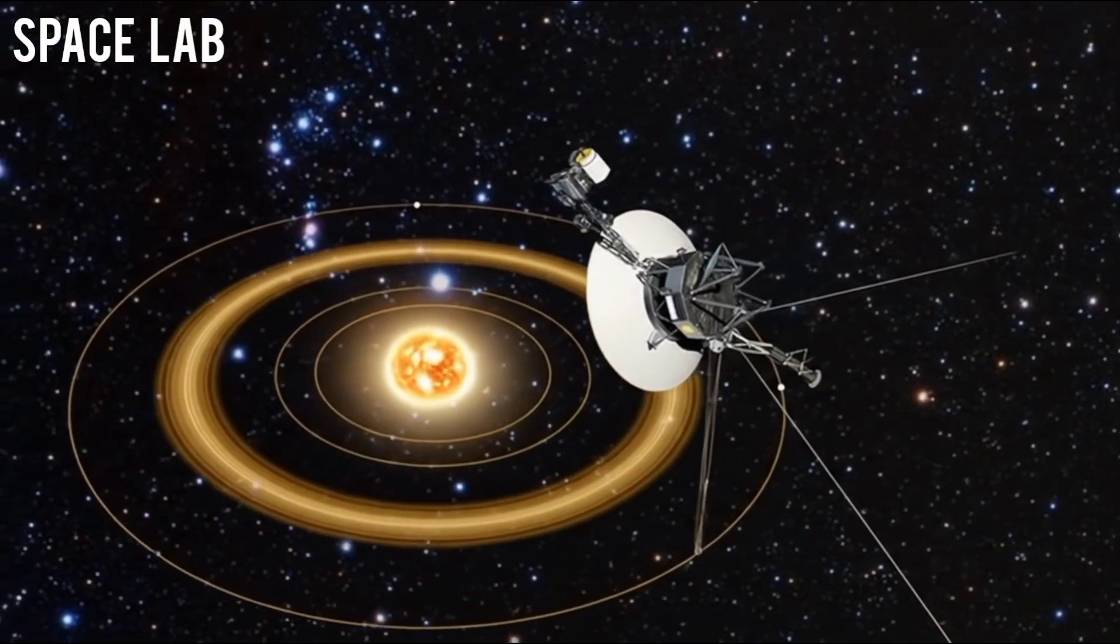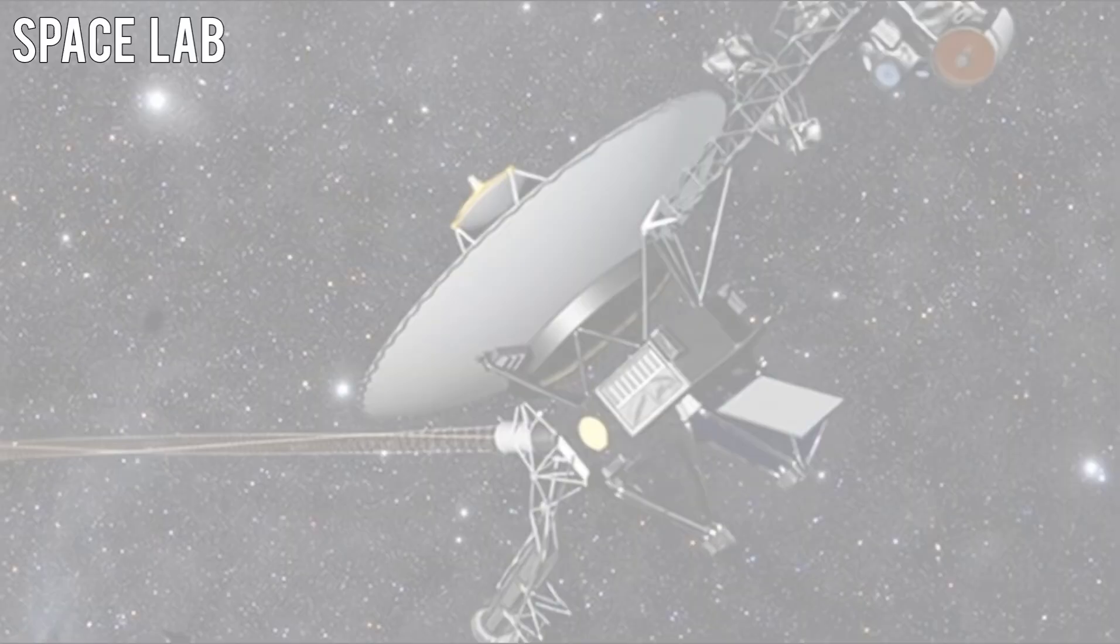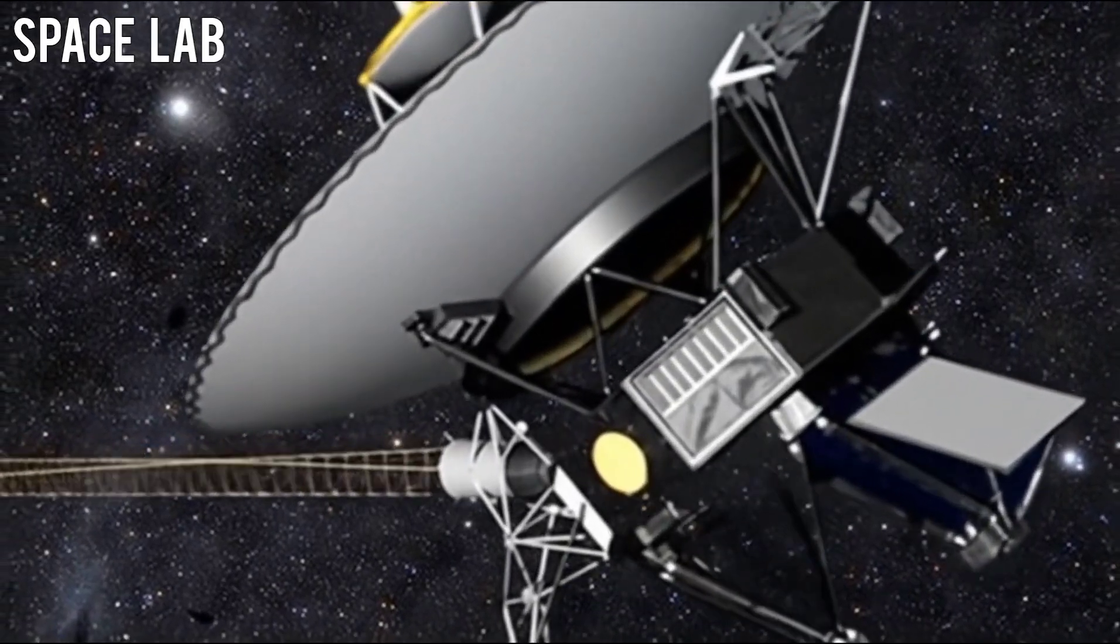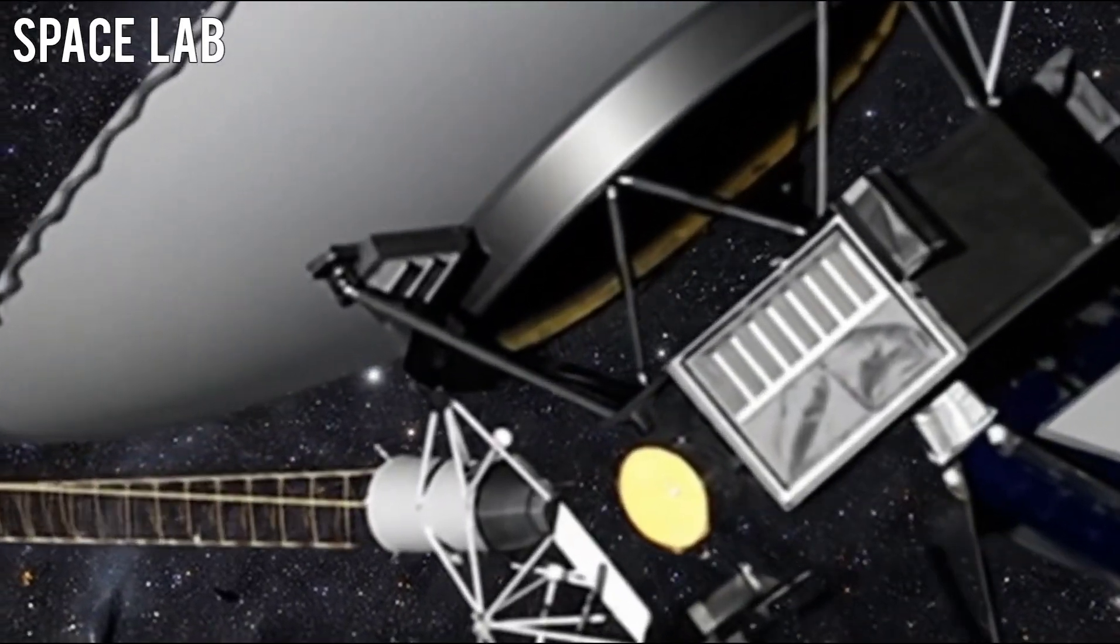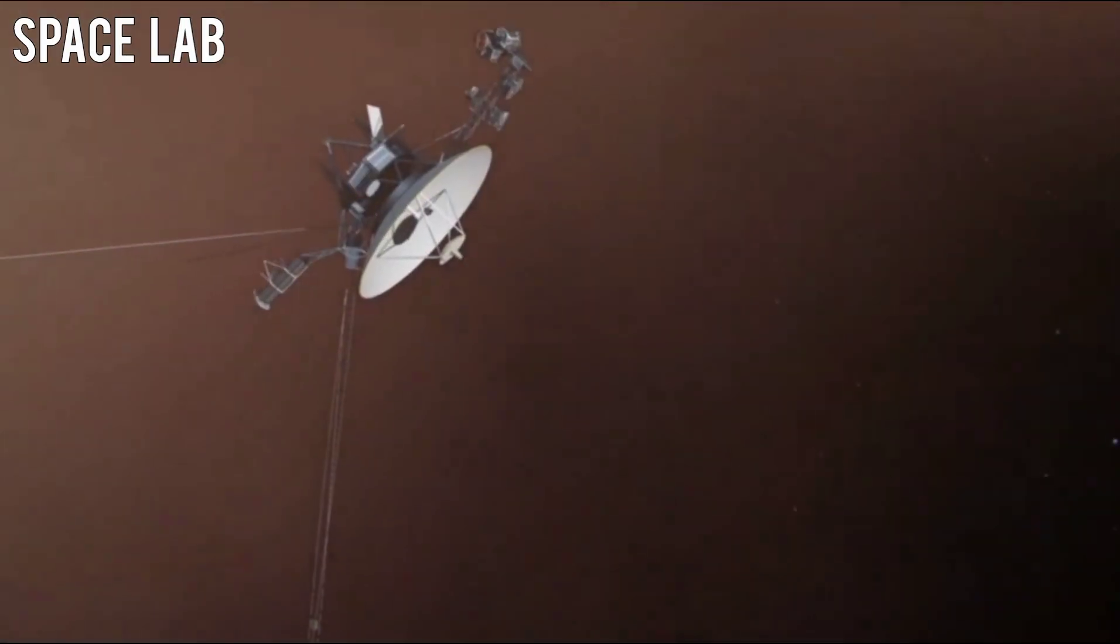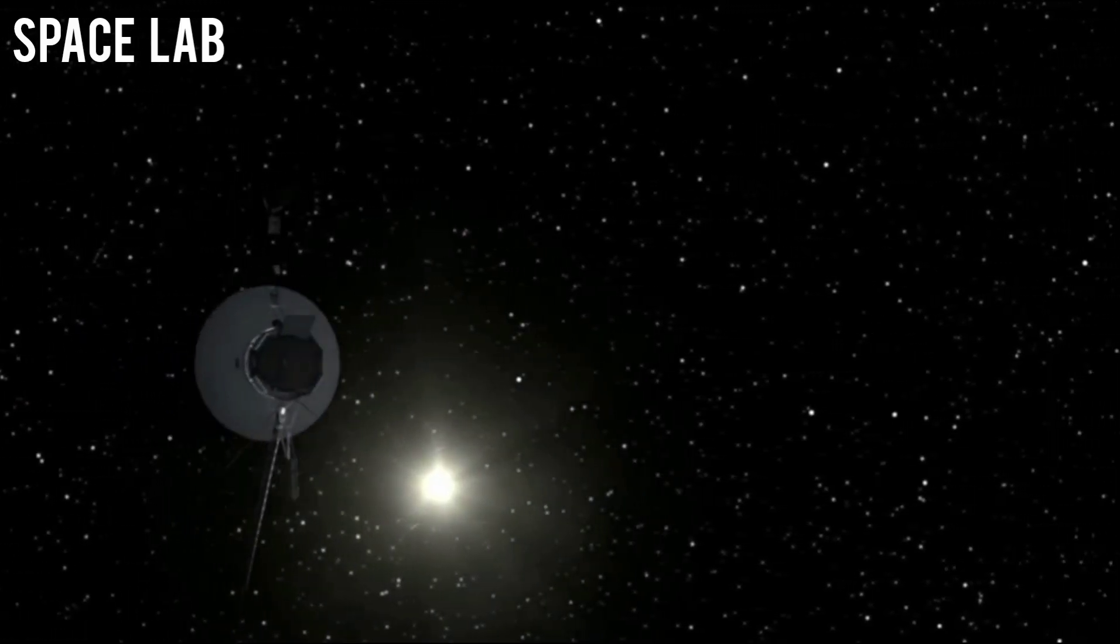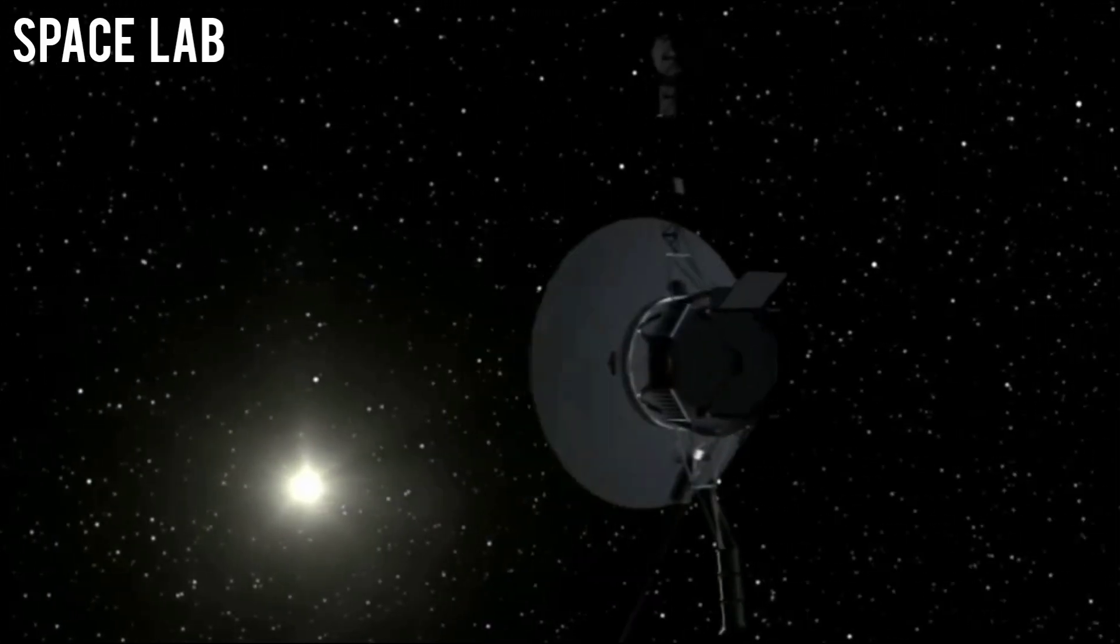To put it simply, Voyager 1 is about to cross the edge of the Milky Way's bubble, the invisible shell of magnetic influence that shields us from the full exposure of intergalactic radiation. Beyond it lies the raw, unfiltered universe—a place untouched by any star system, unshaped by solar winds or galactic fields. A place where space isn't just empty, it's ancient.